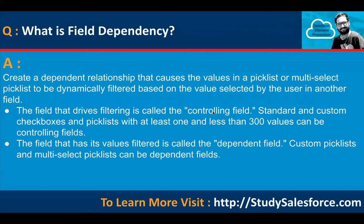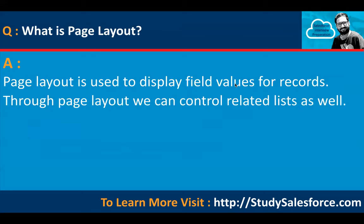What is field dependency? It creates a dependent relationship that causes the value in a picklist or multi-select picklist to be dynamically filtered based on the value selected by the user in another field. The field that drives filtering is called the controlling field — standard and custom checkboxes and picklists with at least one and less than 300 values can be controlling fields. The field that has its value filtered is called the dependent field — custom picklist and multi-select picklist can be dependent fields.